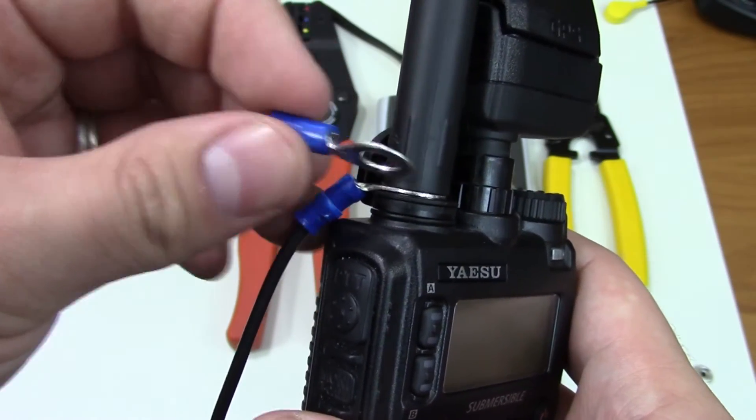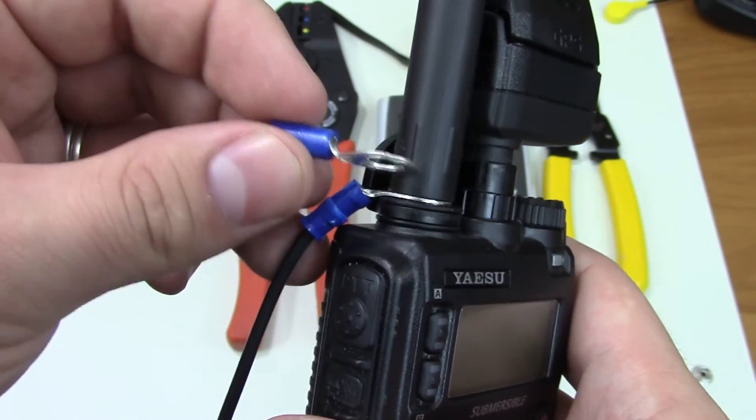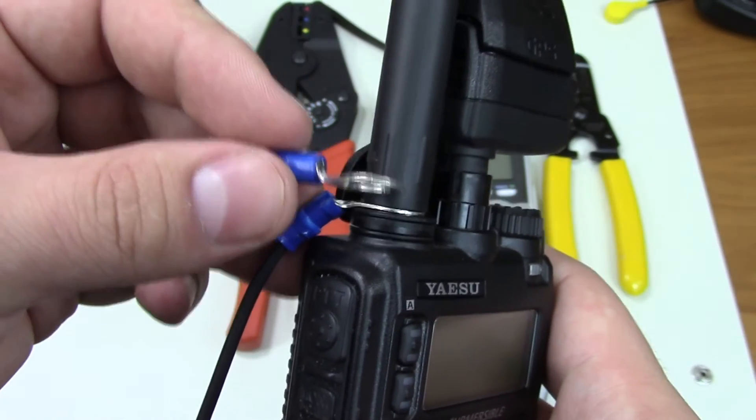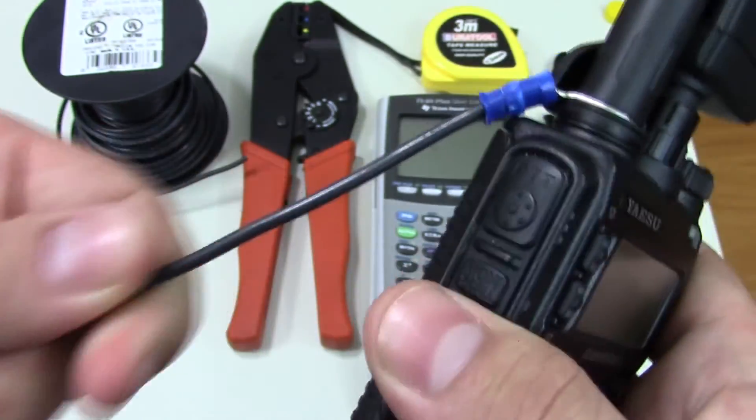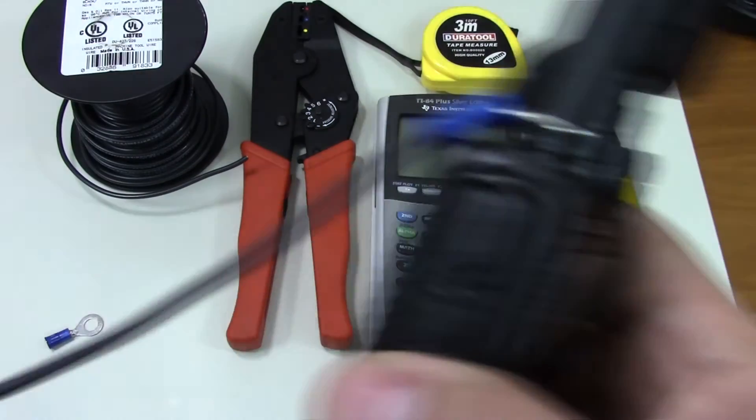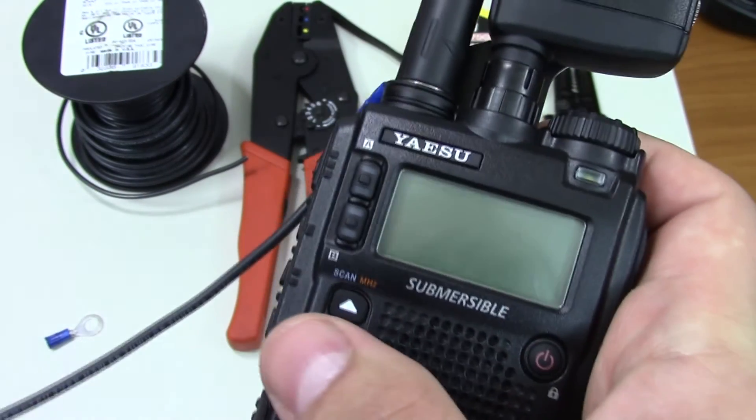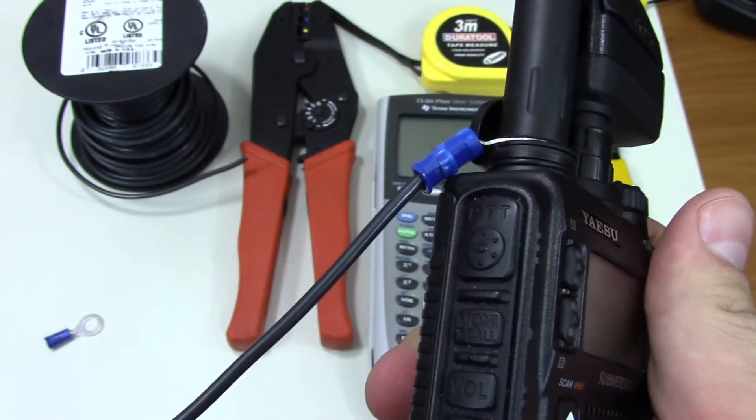So if on your radio there's too much space, you may want to fill this space with like a lock washer or something like that, but you want this to fit tightly. And well, here it goes out of the wire, and that's all there is to it. No black magic, just a wire and a ring terminal.